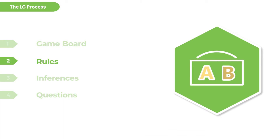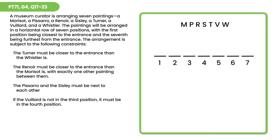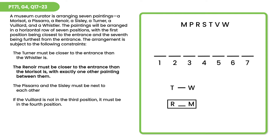Now that we have a game board, we can move on to notating the rules. The first rule: the Turner must be closer to the entrance than the Whistler. We can put that in a relative rule — this builds a relative relationship between T and W and tells us that T is closer to the front than W. The second rule tells us that R must be closer to the entrance than M with exactly one other painting between them, so we have an R, then another painting, then an M — a block.